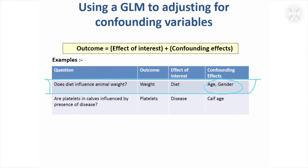What you can do using a general linear model is just put age and gender into the model. So you're analysing weight and you fit diet, age, and gender. The results of the diet are then going to be adjusted for the age and gender of the animals. That's quite a powerful thing to be able to do if you think your groups are unbalanced in any way.